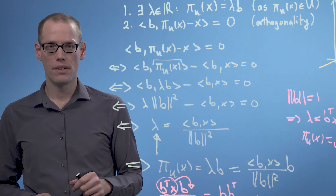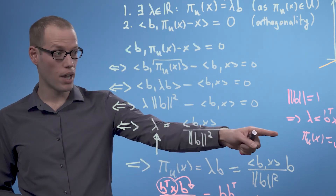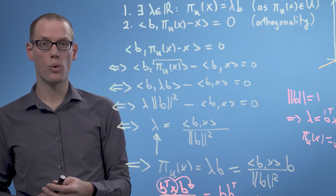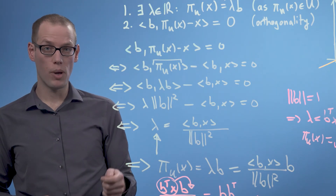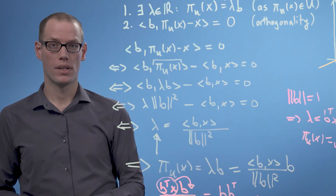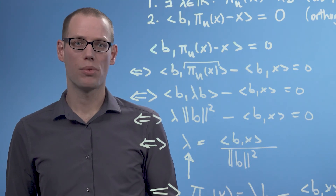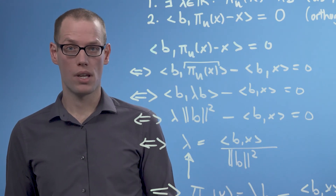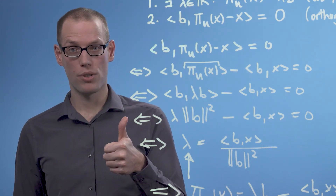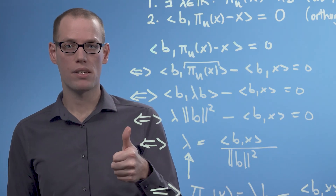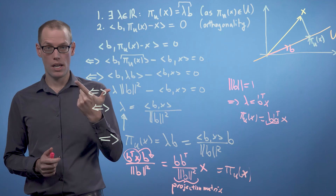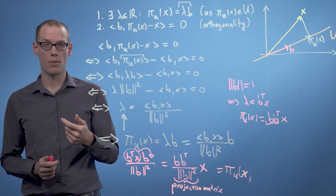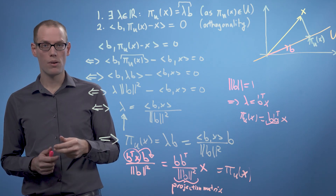Let me make a comment at the end. Our projection pi_u of x is still a vector in R^d; however, we no longer require d coordinates to represent it — we only need a single one, which is lambda. In this video, we discussed orthogonal projections of vectors onto one-dimensional subspaces. We arrived at the solution by making two observations: we must be able to represent the projected point using a multiple of the basis vector that spans the subspace, and the difference vector between the original vector and its projection is orthogonal to the subspace. In the next video, we will look at an example.